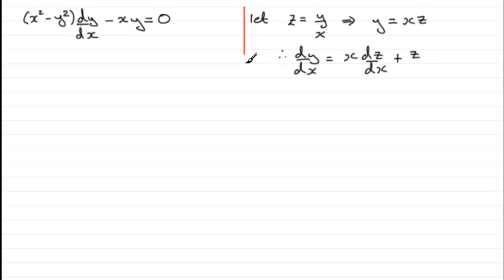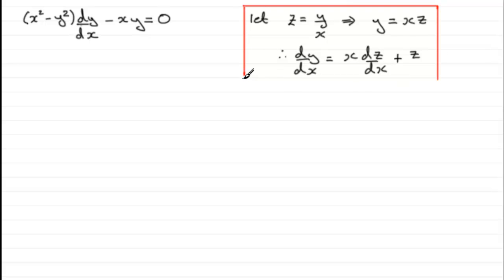So dy/dx = x·dz/dx + z. You'll quite often find you need to use the product rule along these lines. Now we're ready to do some substitutions.